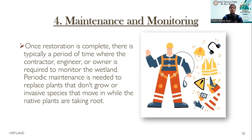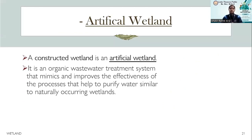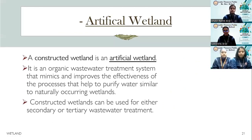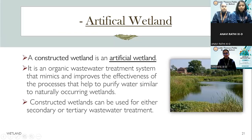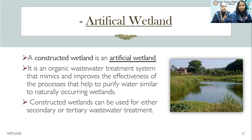The next step is maintenance and monitoring. When the restoration is complete, the wetland must be monitored — which requires replacing plants that don't grow and managing invasive species that move in while native plants establish themselves. Maintaining the wetland area is a continuous process throughout the growing period until vegetation takes hold. But this doesn't conclude the restoration of wetlands, so I would like to call Anushka to describe the artificial method. My name is Anushka, and here is the more subtle method: artificial wetland, also known as constructed wetland. It is an organic wastewater treatment system that mimics and improves the effectiveness of the processes that help to purify water, similar to naturally occurring wetlands.